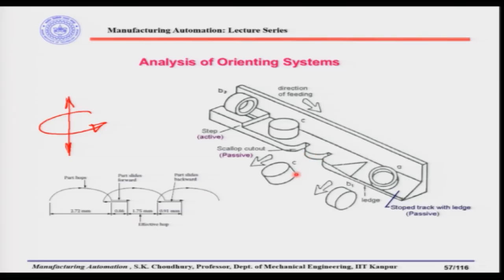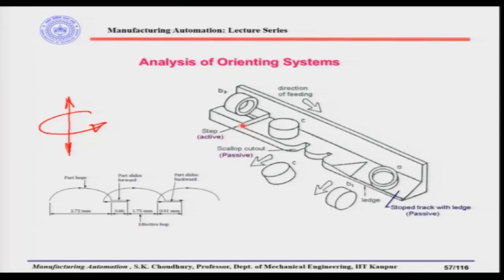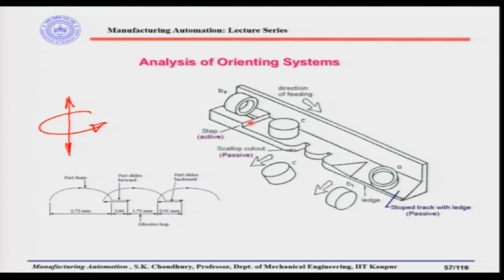The scallop is a passive device: parts with the open side down cannot negotiate it and fall — they are rejected, not reoriented. The step, however, can be considered an active device because many parts in different orientations are actually reoriented to the desired orientation, such as heavier side down.